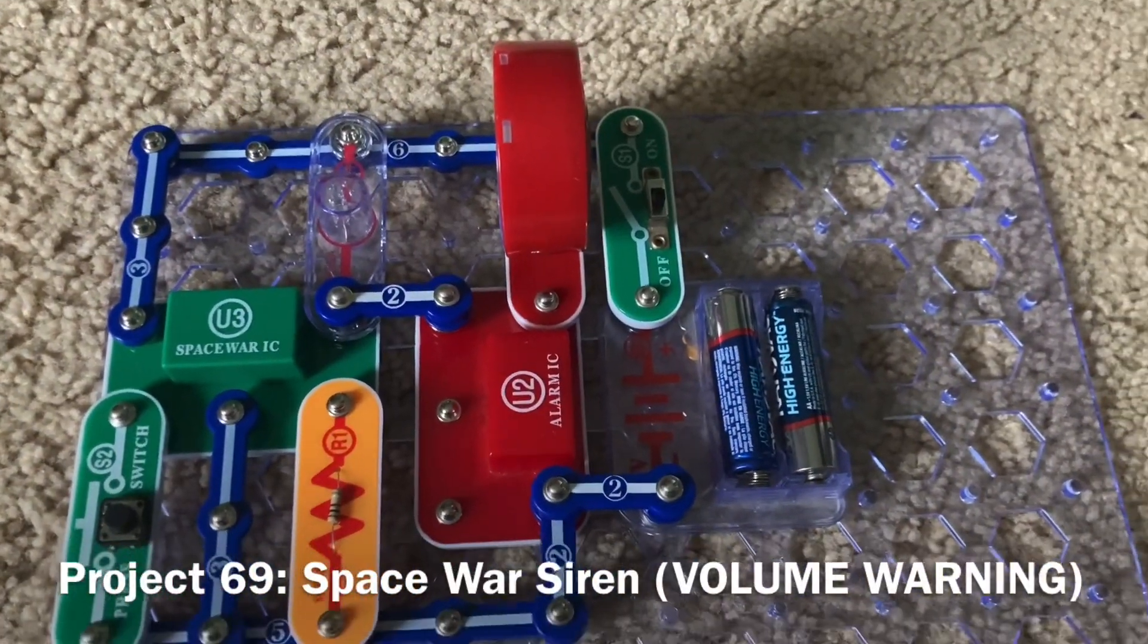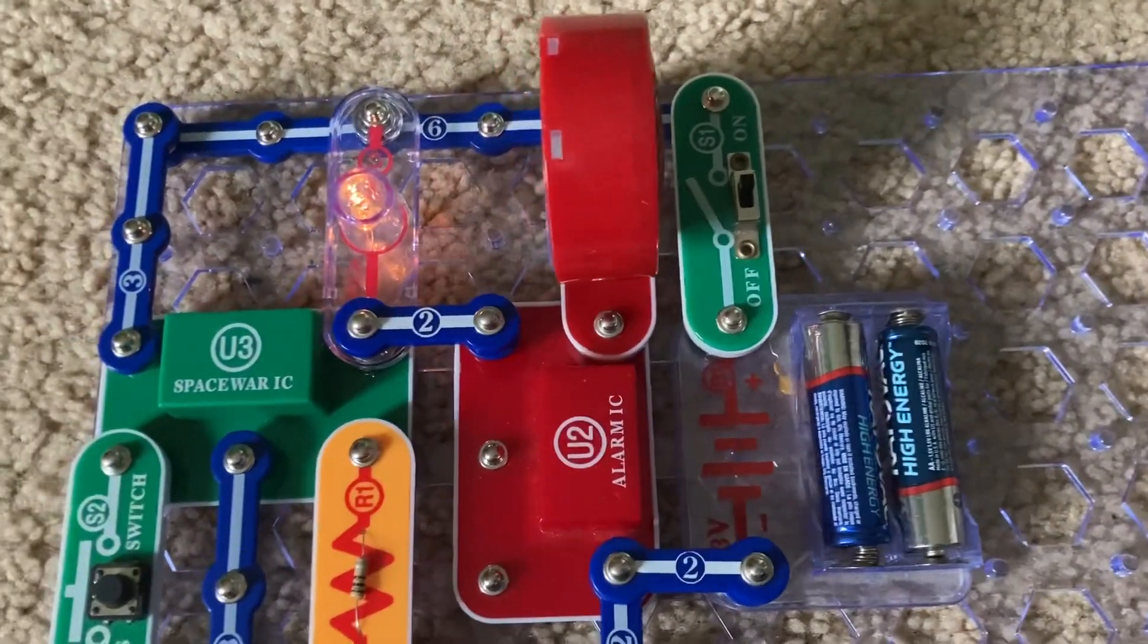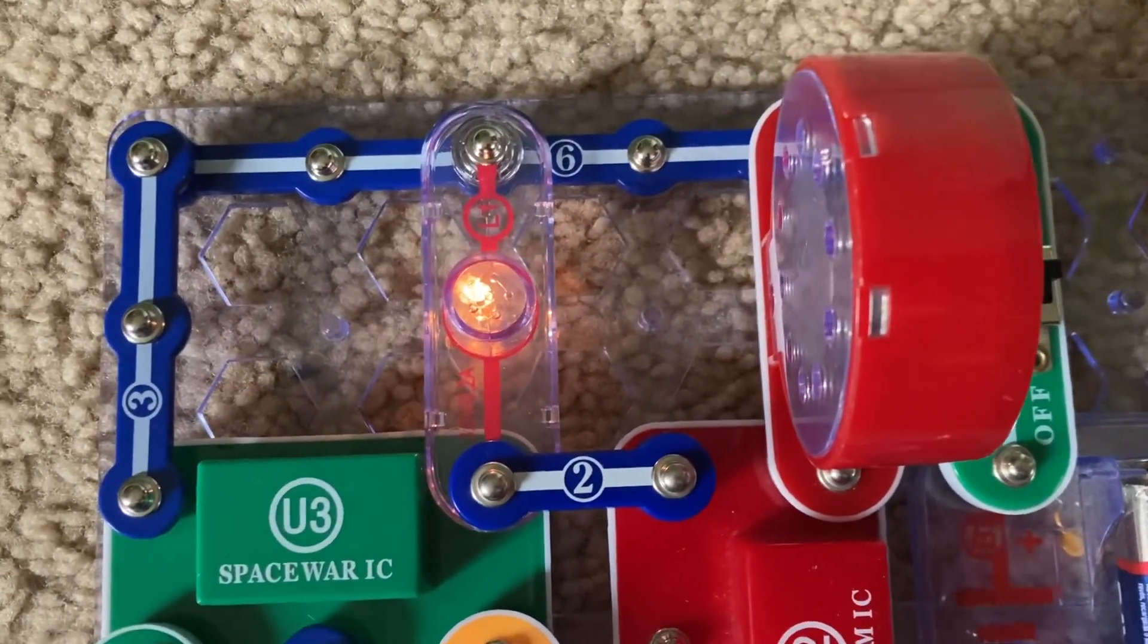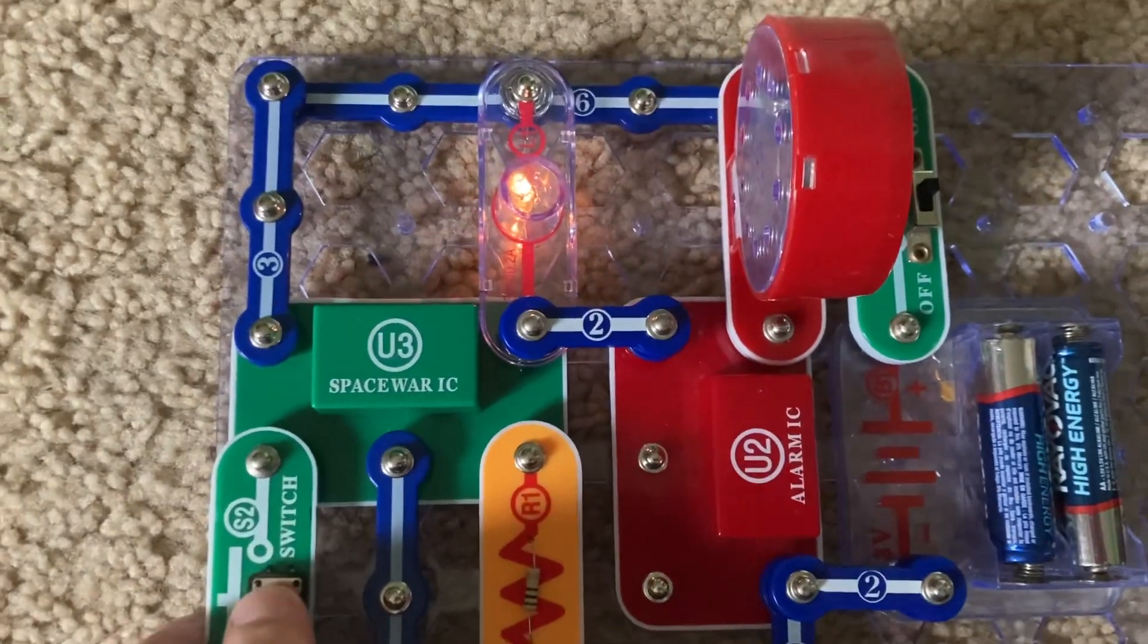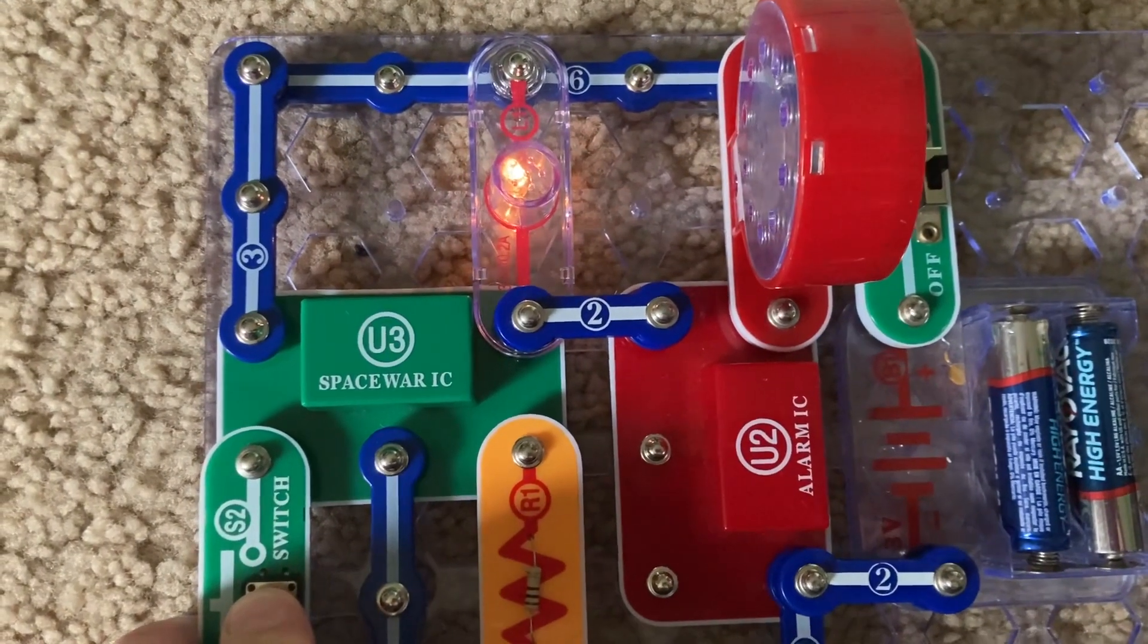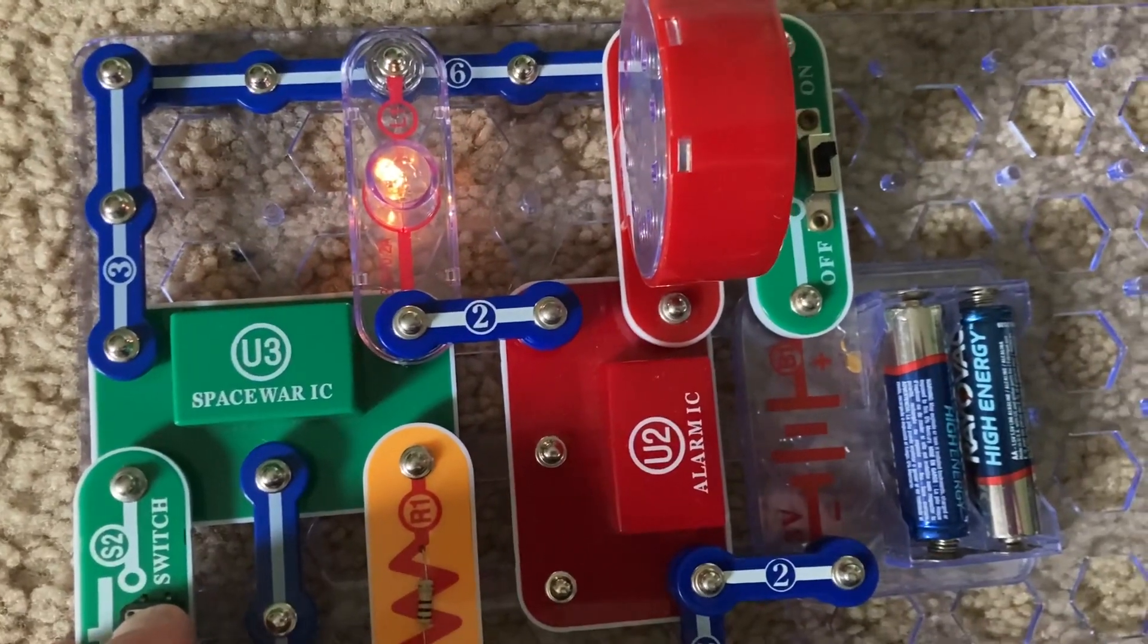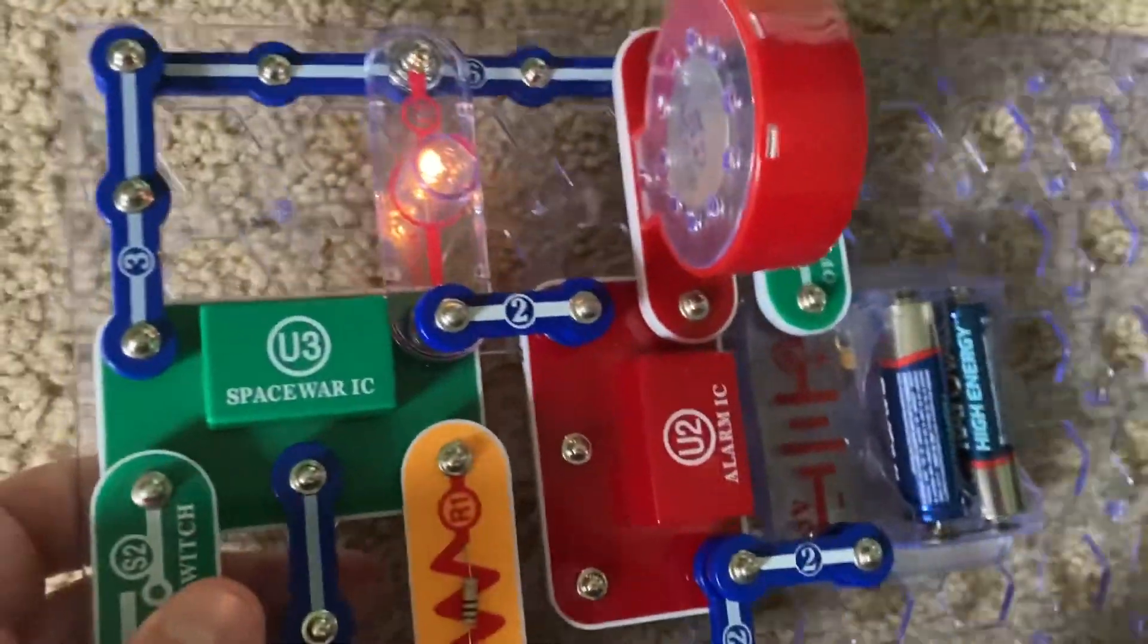Project 69 is Space War siren. When I turn on the slide switch, the alarm will sound as a machine gun and the L1 lamp will glow dimly. Now, when I hold down the press switch, the lamp will get a little bit brighter. Actually, it doesn't seem to be doing that for me, but that's what they say happens when you hold down the press switch.